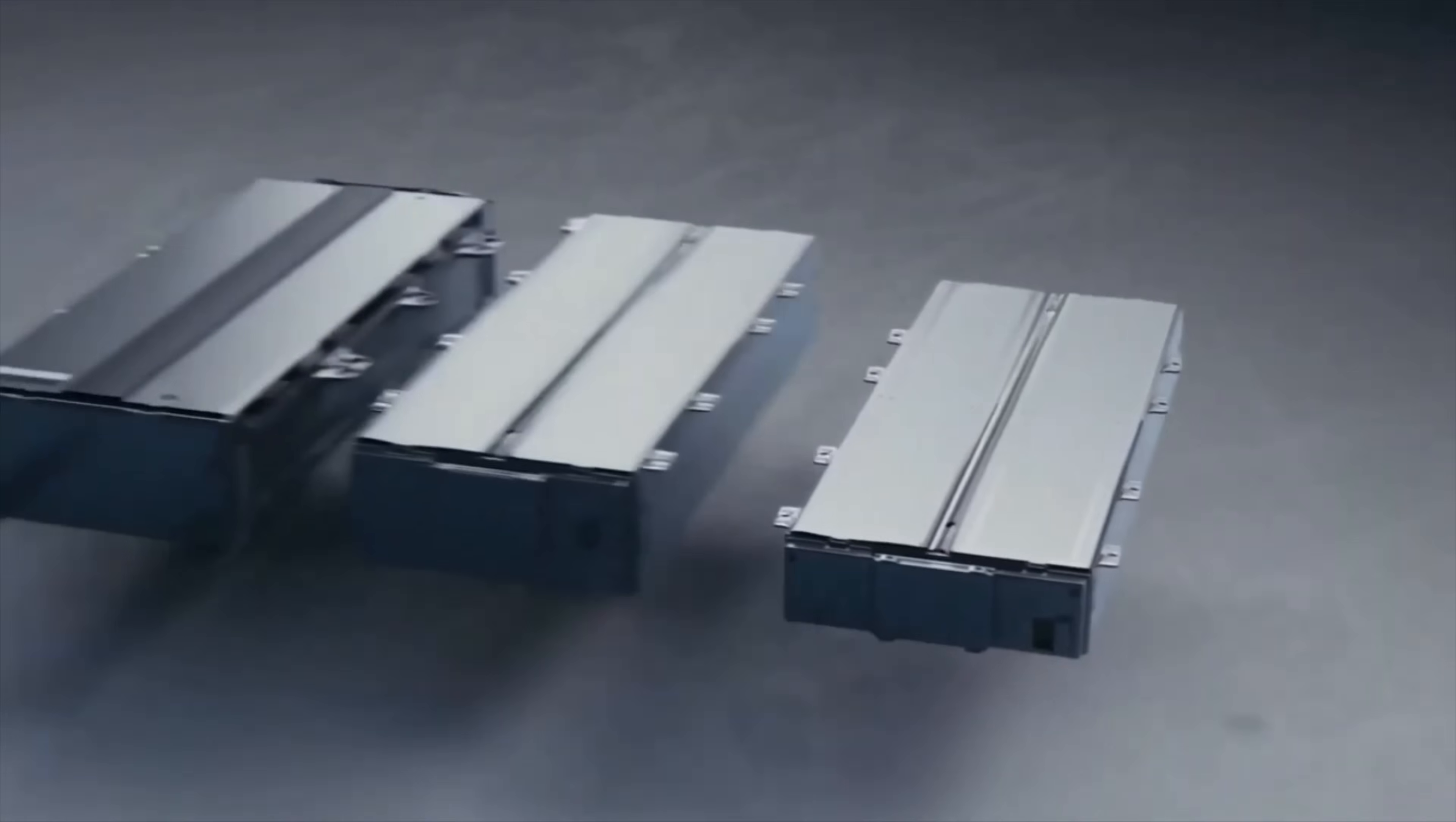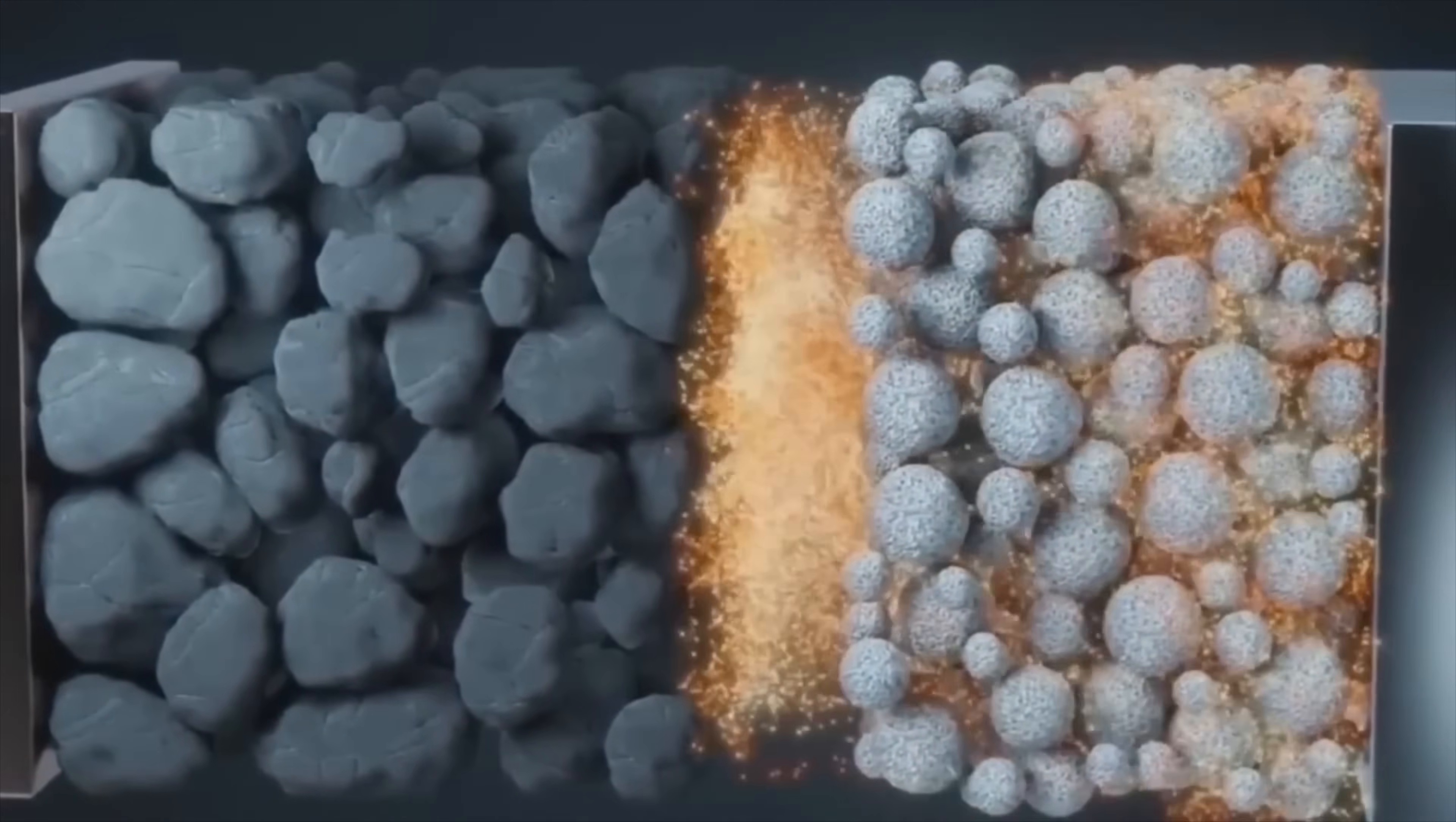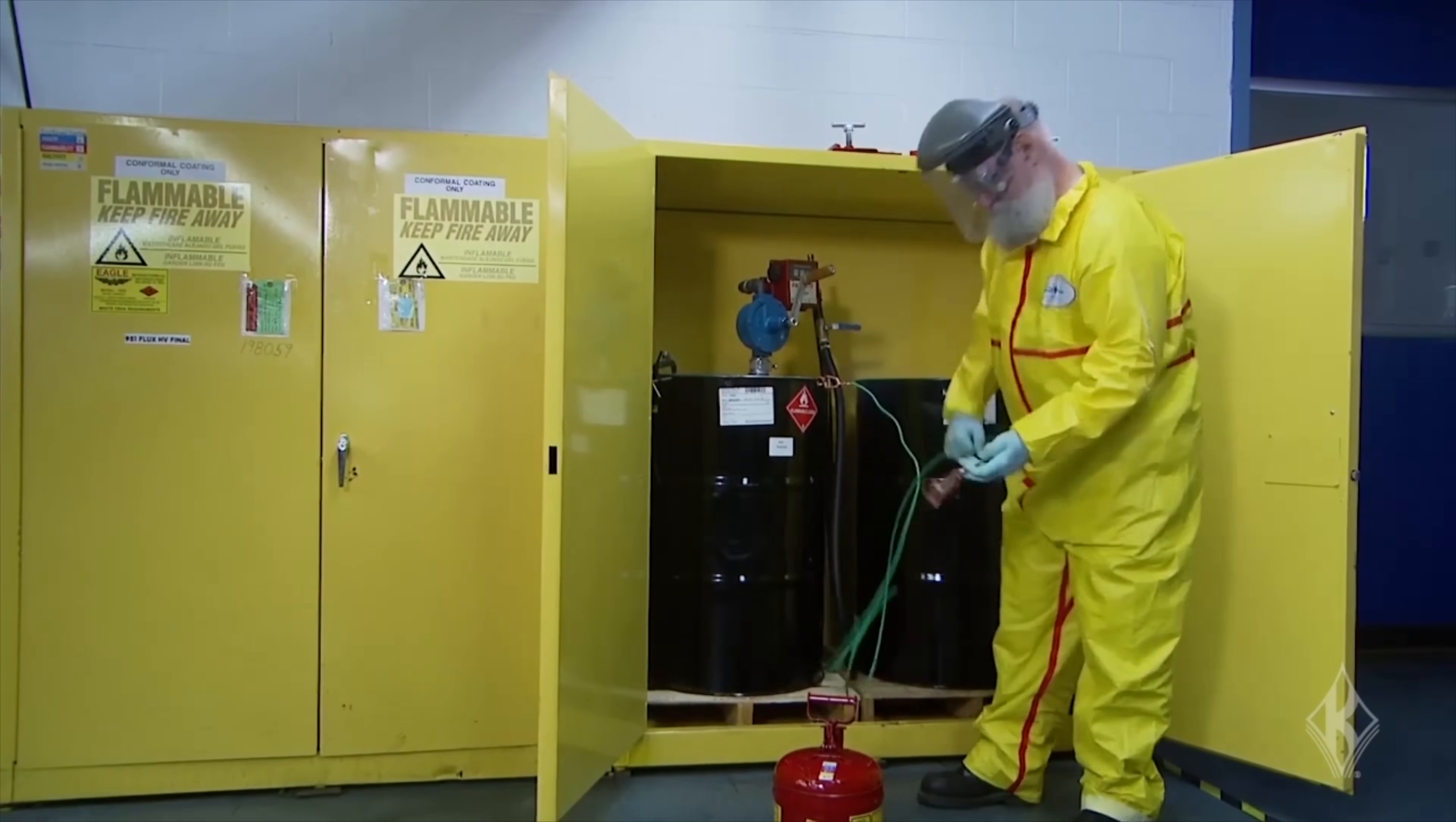Besides having high-performance metrics, NASA's Sulfur-Selenium Solid-State Battery also offers some other benefits over conventional lithium-ion batteries. For instance, it's more secure. It eliminates the use of flammable liquid or gel electrolytes, which can cause fire or explosion hazards. It also tolerates temperatures up to twice as high as conventional lithium-ion batteries, which makes it more adaptable to extreme conditions such as space or deserts.